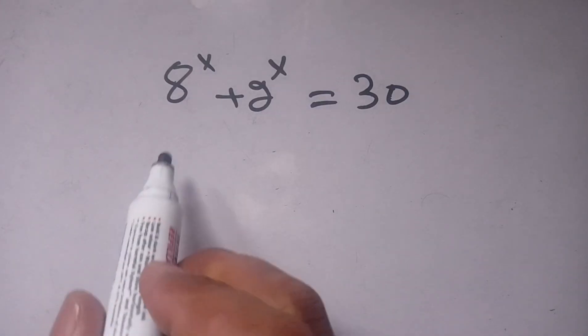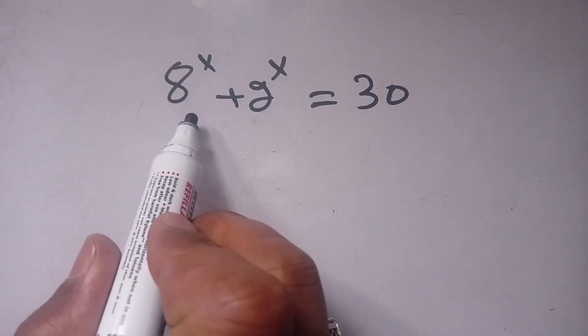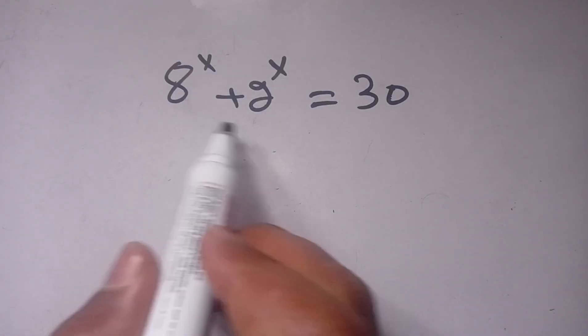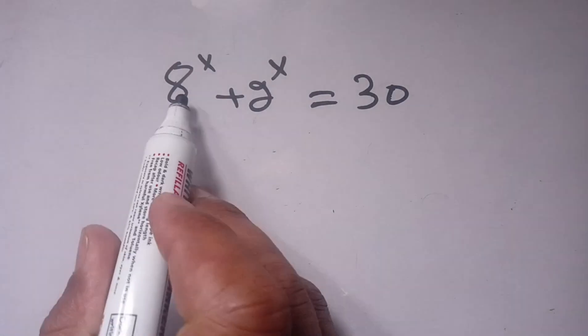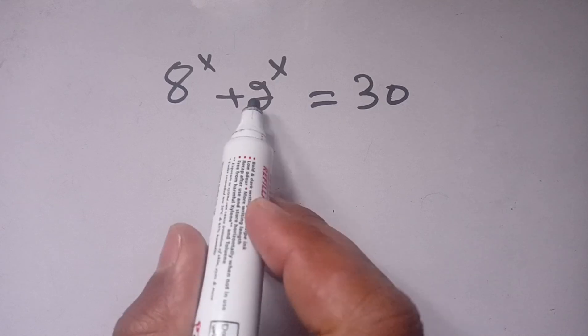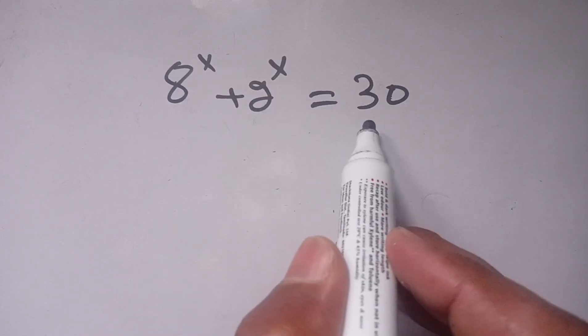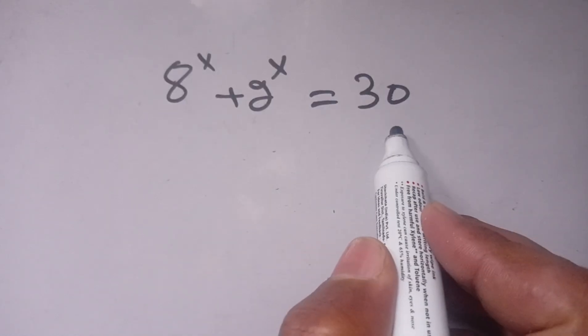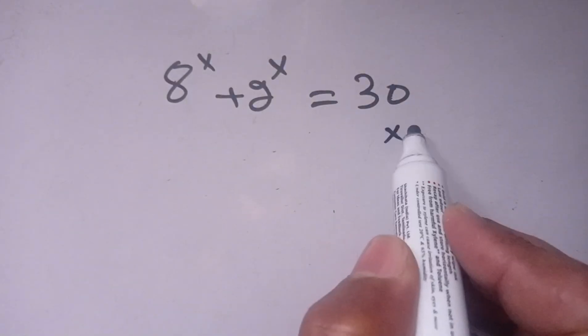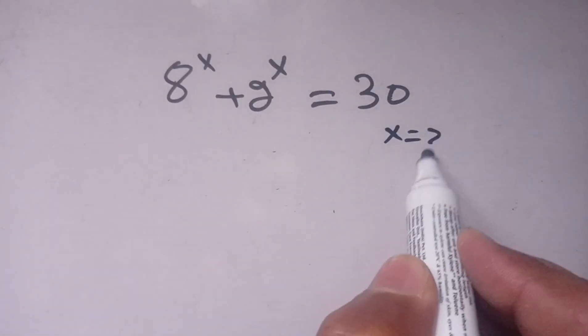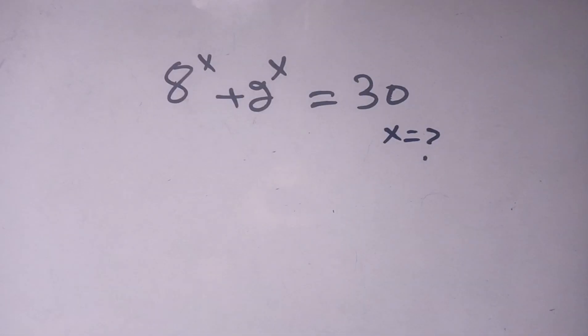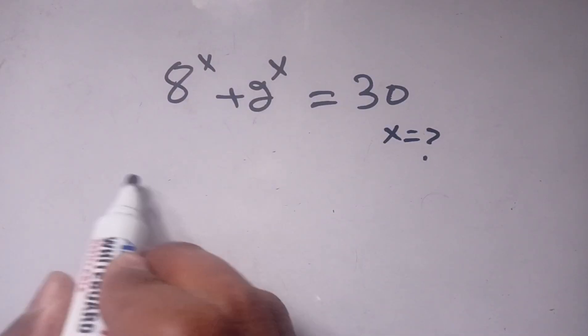Hello everyone. In today's video we are going to solve this exponential equation: 8 to the power x plus 2 to the power x is equal to 30, and we have to find the value of x which satisfies this exponential equation.